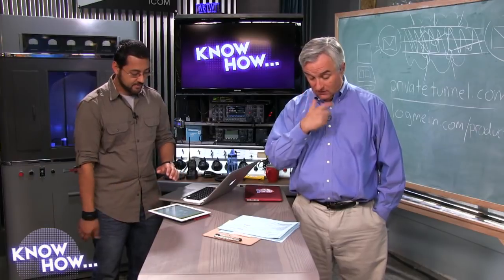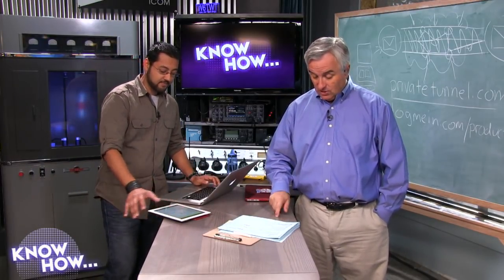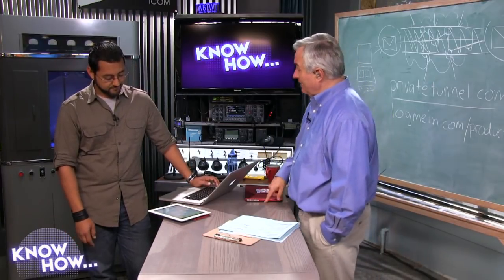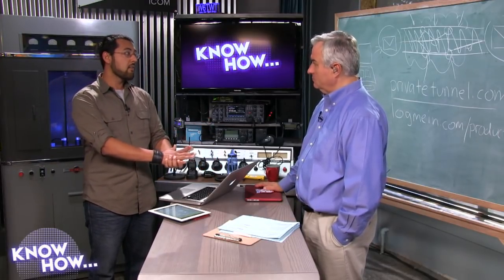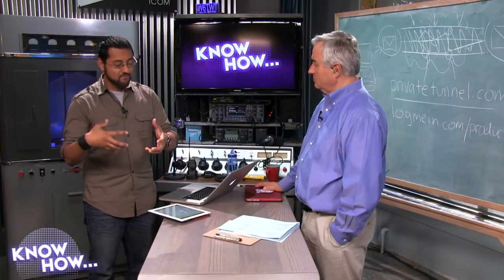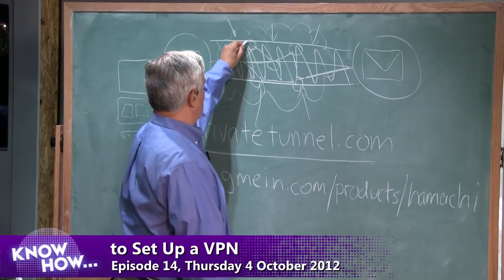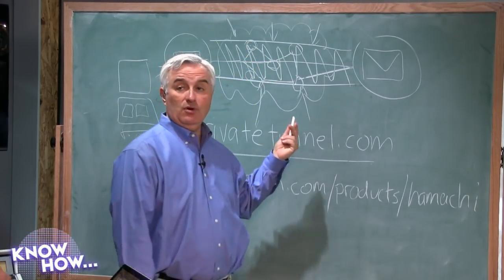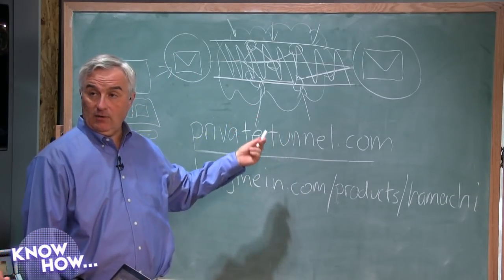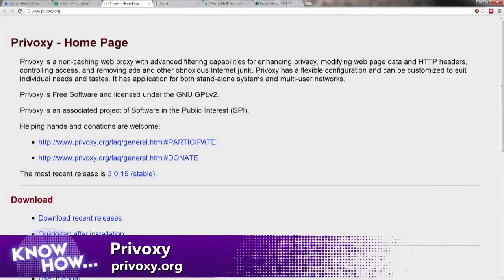So at home you've got a setup you know is safe — you know your firewall, your routers, who you're connecting to. When you're on the road you don't know who's in the middle, who those servers are. Maybe you're at work and you don't want the boss to see your email. So we're going to install Privoxy on your always-on machine. Go to privoxy.org — again all these links are in the show notes at twit.tv/kh.